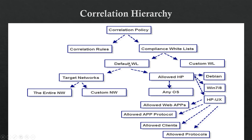For example, inside the whitelist you can have allowed HP PCs or any operating system — Debian, Windows 7, Windows 8, HP-UX — allowed web applications, allowed application controls, allowed clients, and allowed protocols. You can allow or deny whatever you want. In the default whitelist, the target network is the entire network (0.0.0.0/0) or a custom network.